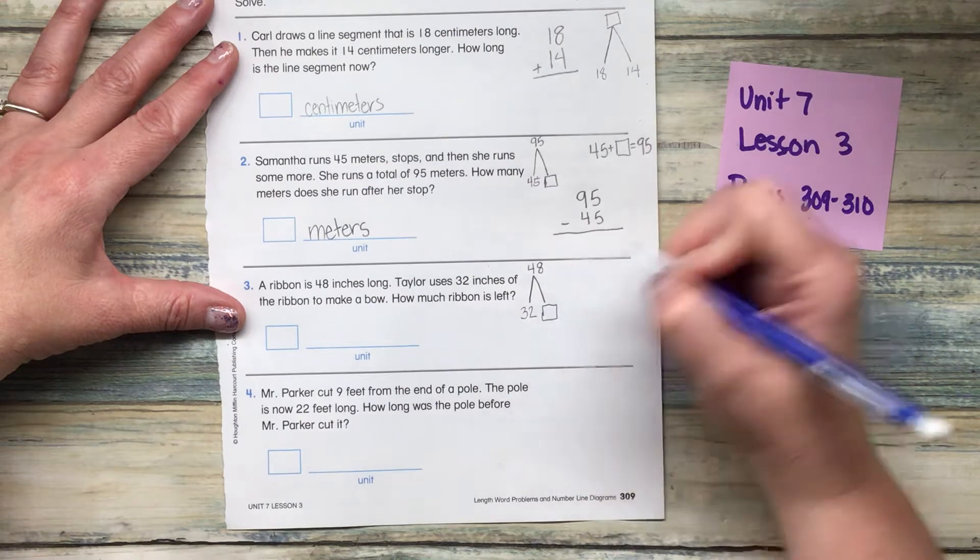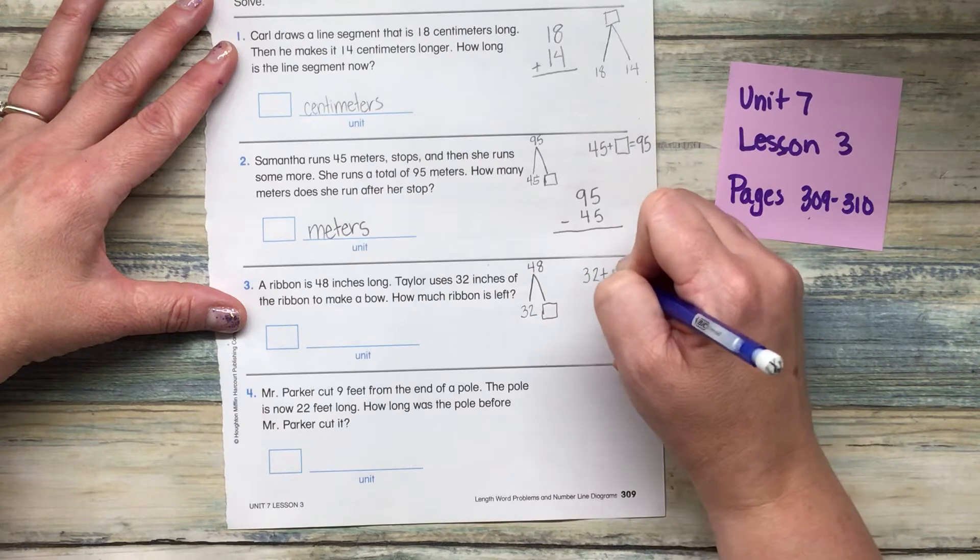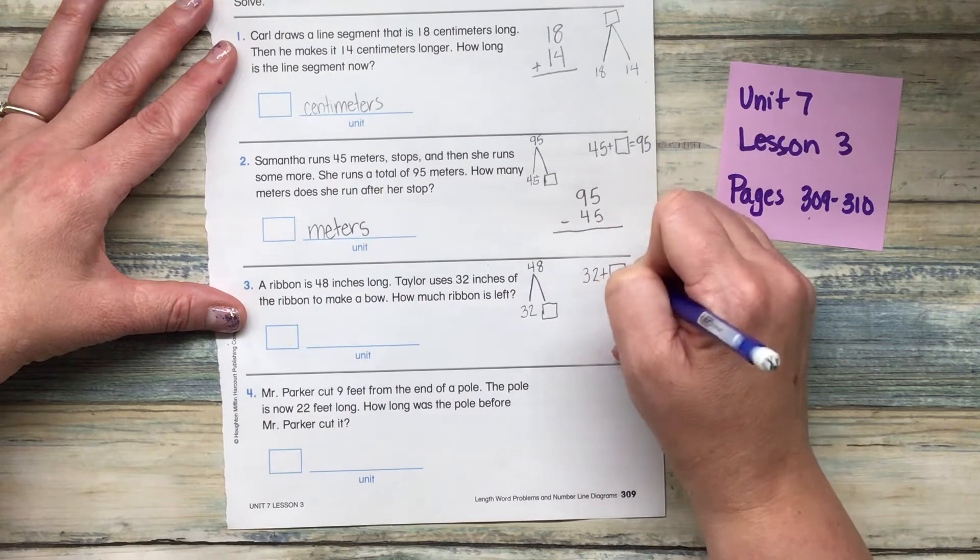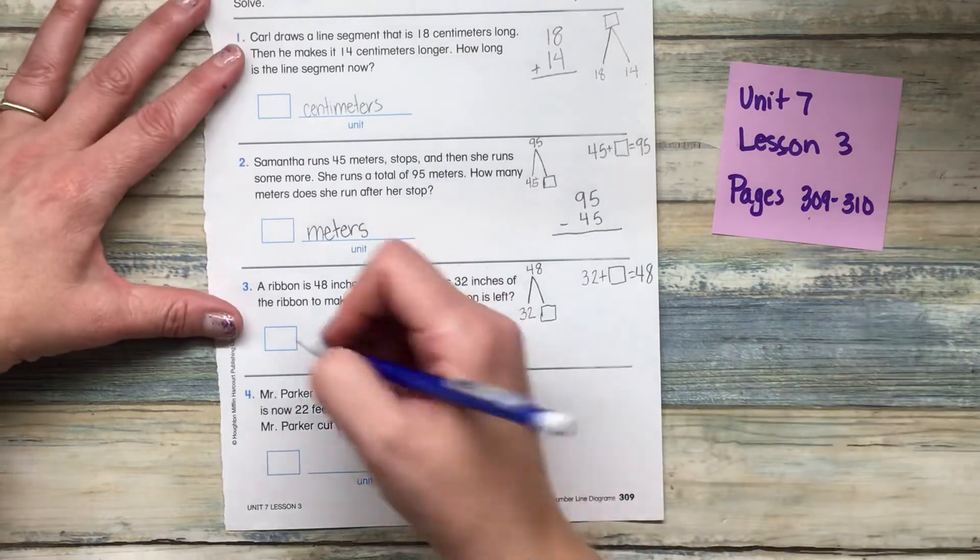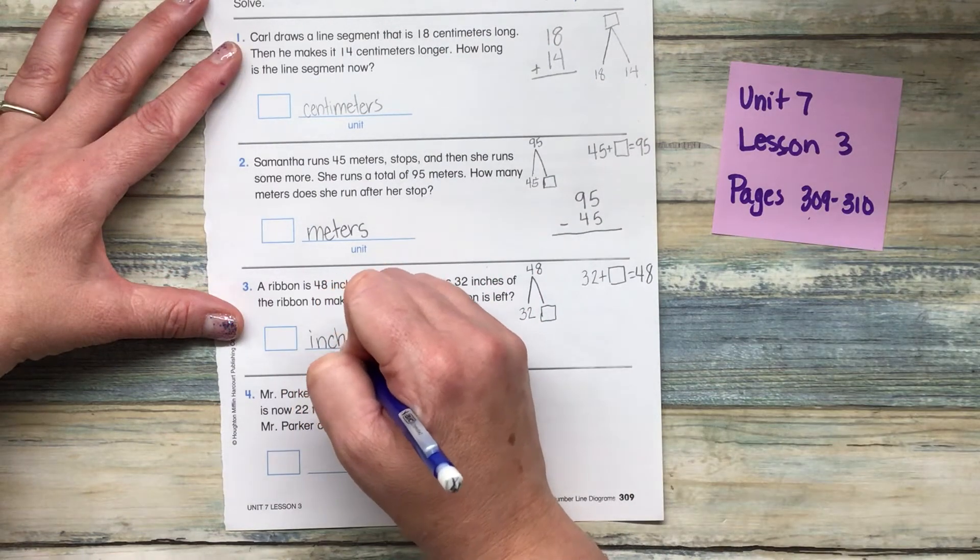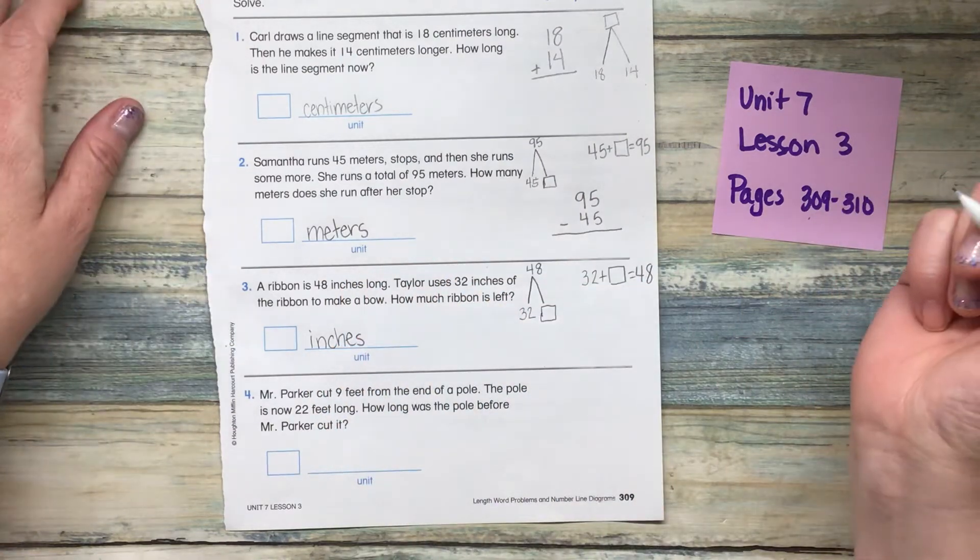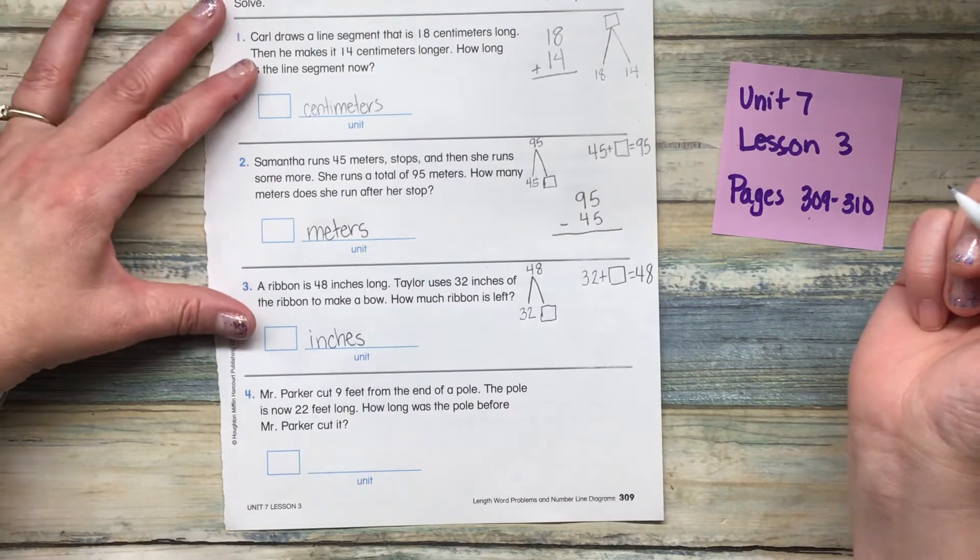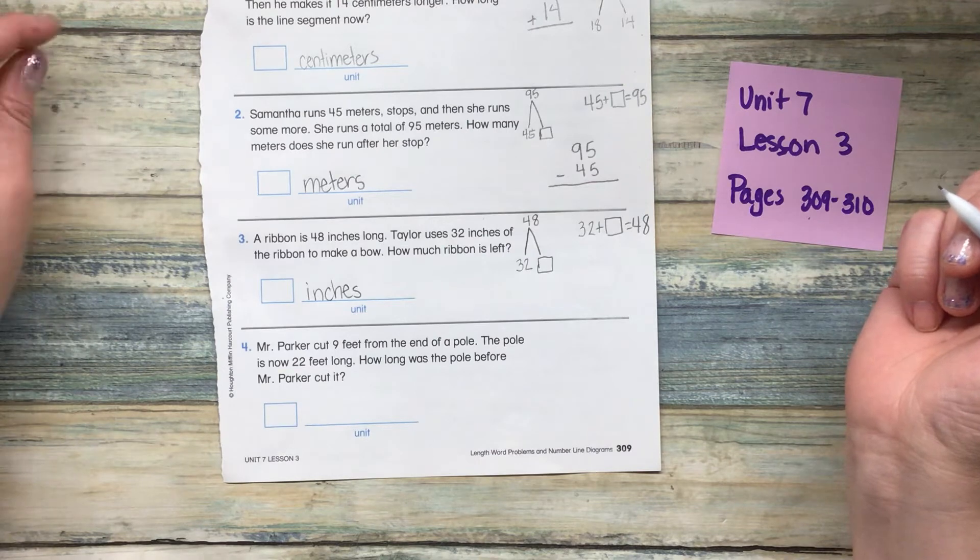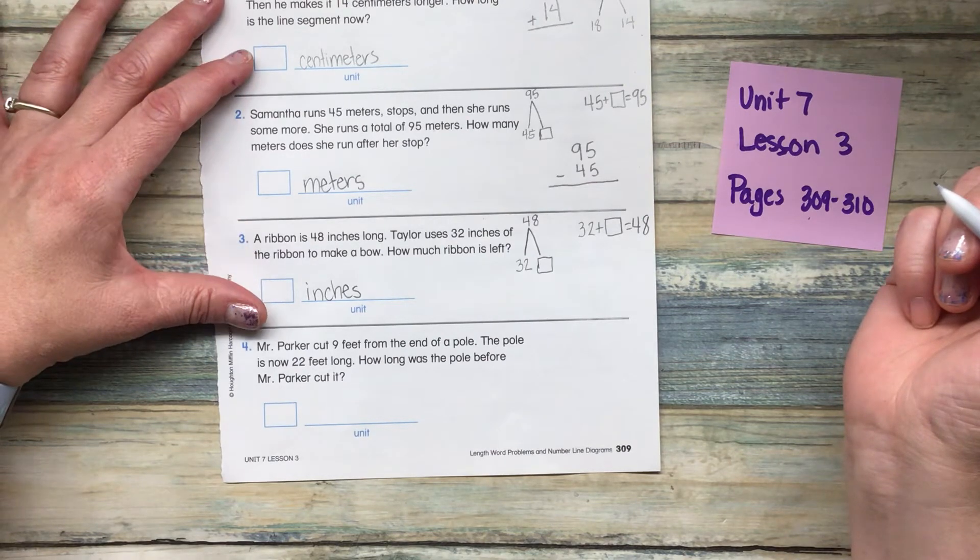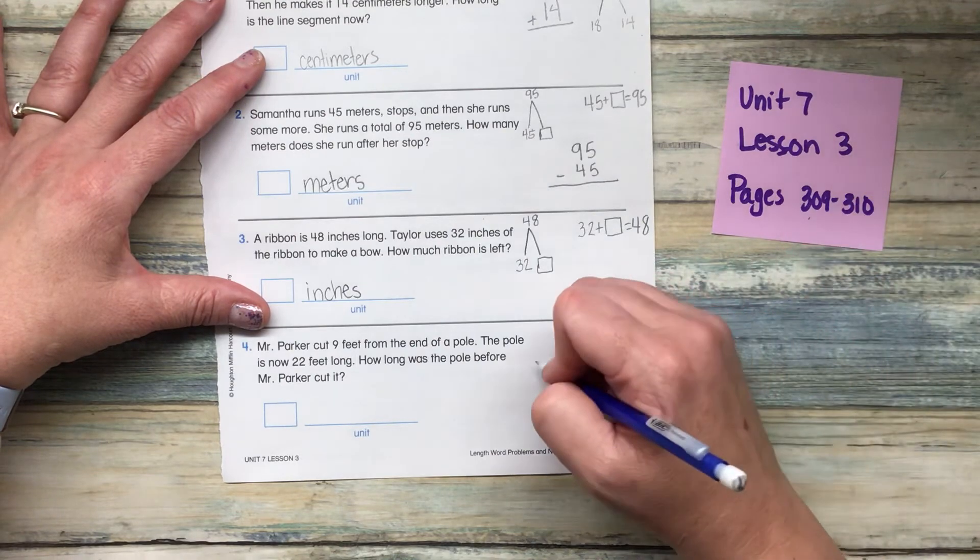We need to figure out what's the missing partner. Number four, Mr. Parker cuts nine feet from the end of a pole. The pole is now 22 feet long. How long was the pole before Mr. Parker cut it?